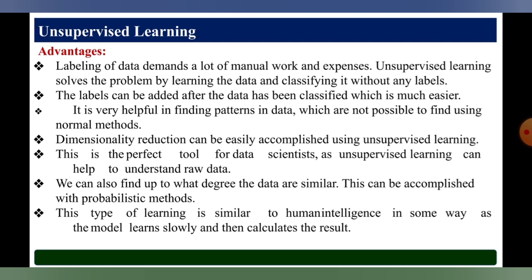It is very helpful in finding patterns in data which are not possible to find using normal methods. Dimensionality reduction can be easily accomplished using unsupervised learning — this is a perfect tool for data scientists, as it can help to understand raw data sets. We can also find out the degree to which data are similar, accomplished with probabilistic methods. This type of learning is similar to human intelligence in some way, as the model learns slowly and then calculates results.